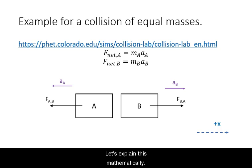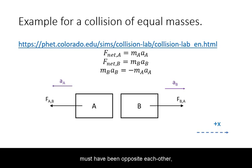Let's explain this mathematically. The net force on each object, in this case, was by the other object. These forces, by Newton's third law, must be equal but opposite in direction. Hence, the acceleration must have been opposite each other, and because of the equal mass, must have had the same magnitude.